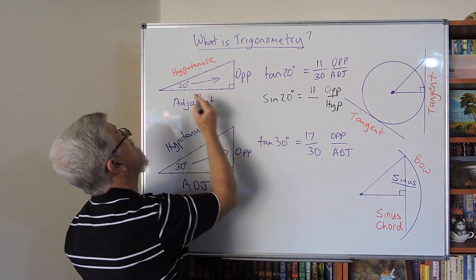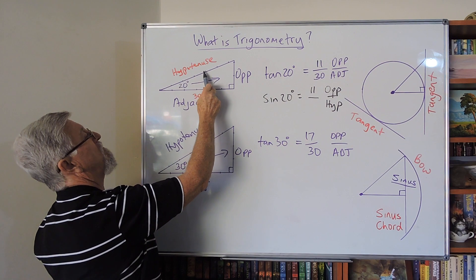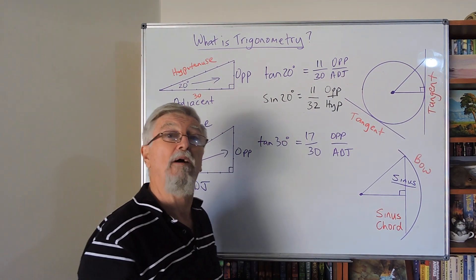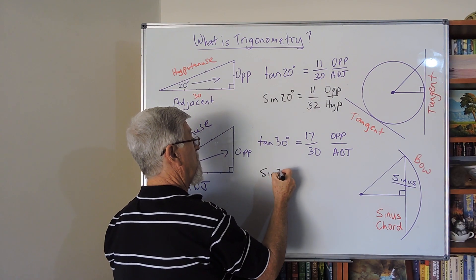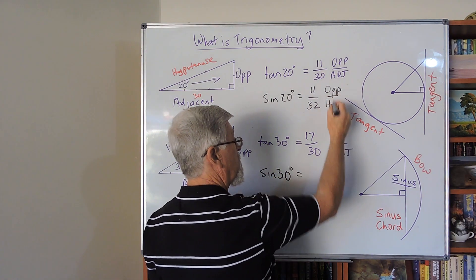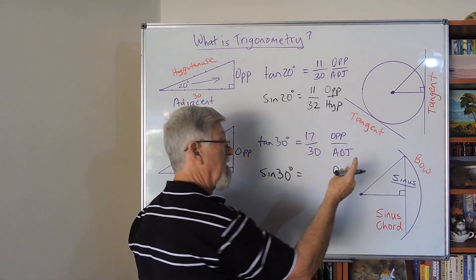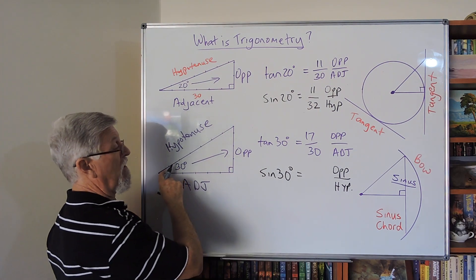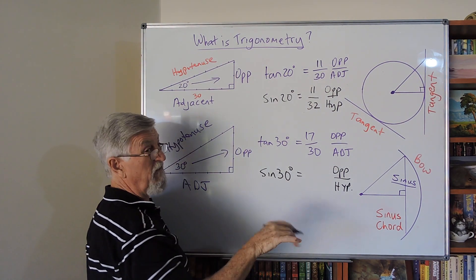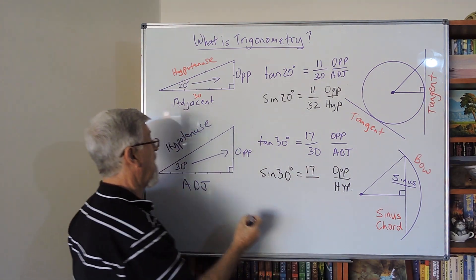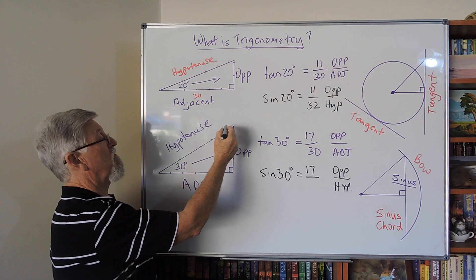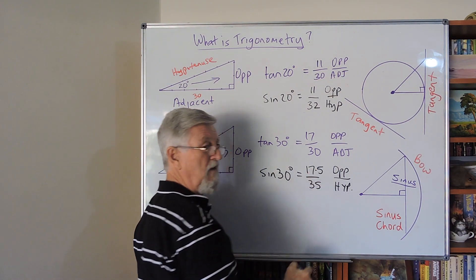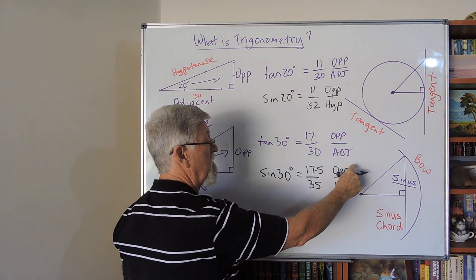So for sine of 20 degrees, the opposite is about 11 and the hypotenuse is about 32. For the sine of 30 degrees on this triangle, the opposite is about 17 and a half, and the hypotenuse across here is about 35. So that's a nice easy one to compare — what the opposite is to the hypotenuse. Most math teachers call it 'sine' rather than 'sin,' though both are used.